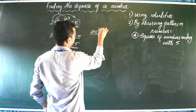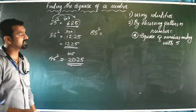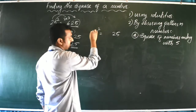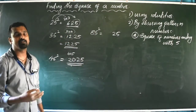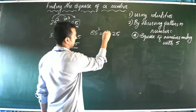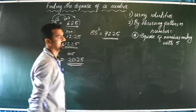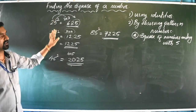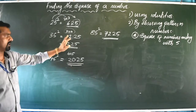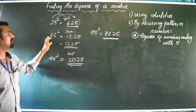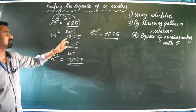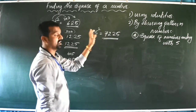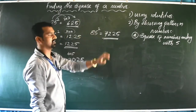For 85²: last digit is 5, so we write 25. First digit is 8, and 8 × 9 = 72. So 85² = 7225. The rule is: write 25 at the end, then multiply the first digit by the next consecutive number and place it in front.